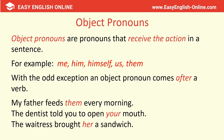Object pronouns are pronouns that receive the action in a sentence. Examples are me, him, himself, us, them. With the odd exception, an object pronoun comes after a verb. For example: 'My father feeds them every morning,' 'the dentist told you to open your mouth,' and 'the waitress brought her a sandwich.'